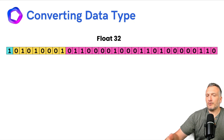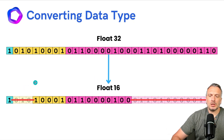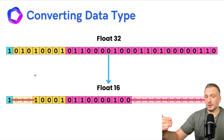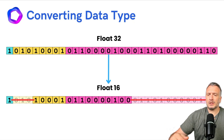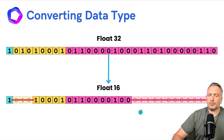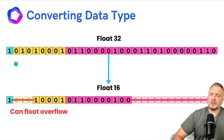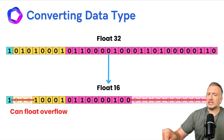Let's see how we convert a Float32 to another data type, say Float16. We essentially need to remove some bits. The exponent differs because we subtract 127 for Float32 and 15 for Float16, so there are some conversions required — it's not as simple as dropping the first few digits. For the mantissa, it is simpler: we remove the last bits allocated for the mantissa, which rounds it down and produces some rounding errors. If the Float32 number is larger than Float16's maximum, we will get a float overflow error, so we must be careful about the value being converted.